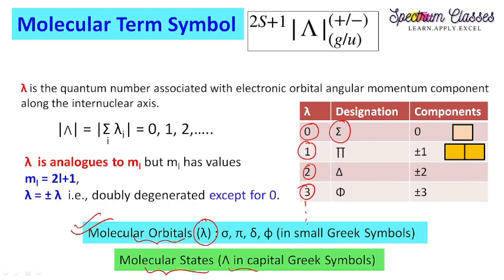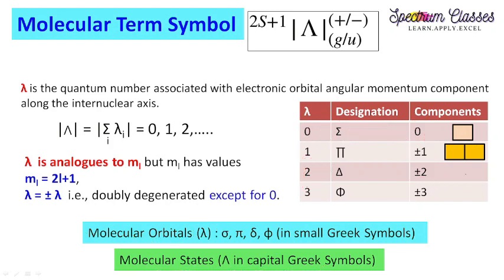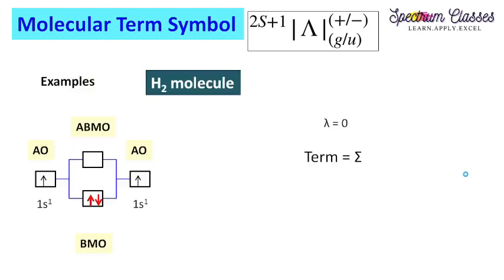To be clear: the uppercase Π (lambda = 1) designates the molecular state, and uppercase Δ (lambda = 2) designates the delta state and so on. Except for sigma (lambda = 0), all states are doubly degenerate — you can see plus and minus values. So for pi we have +1 and −1, and for delta we have +2 and −2. These are the values for the orbital angular momentum along the internuclear axis.